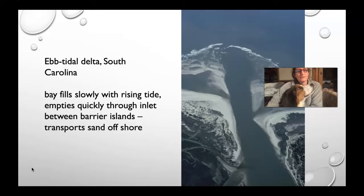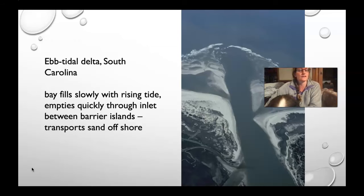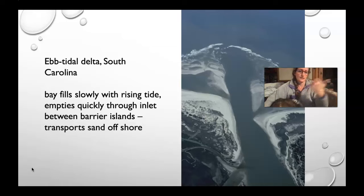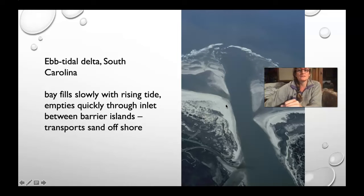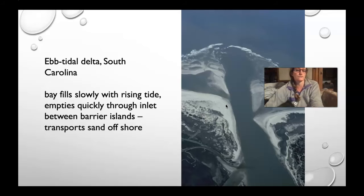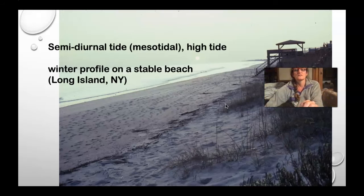This is an ebb tide delta. An ebb tide means that the water is going out. There's an inlet in the center of the image, and on either side are barrier islands. The water going out to sea during the ebb tide creates what we call the ebb tide delta — sandbars offshore. The bay fills slowly with the rising tide and empties quickly through the inlet between the barrier islands, transporting sand offshore.